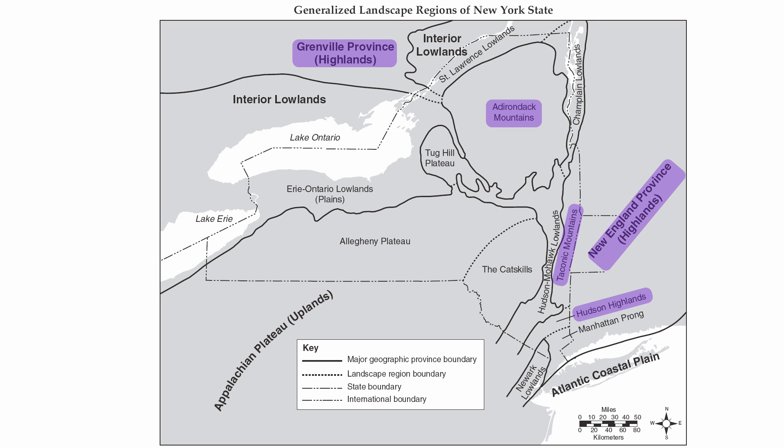One feature that doesn't fit into a nice category is the Manhattan Prong, which is the region Westchester County is found in. The Manhattan Prong is a special feature because you have a variety of rock types — sedimentary, metamorphic, and even igneous. You also have a dramatic change in elevation over a short period of time, so this part of New York State doesn't fit into a neat category.